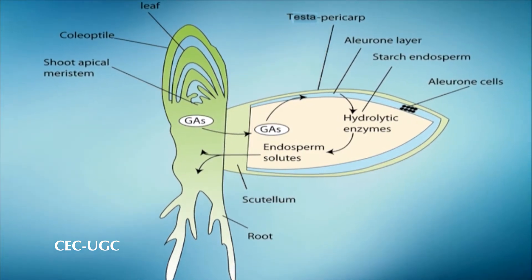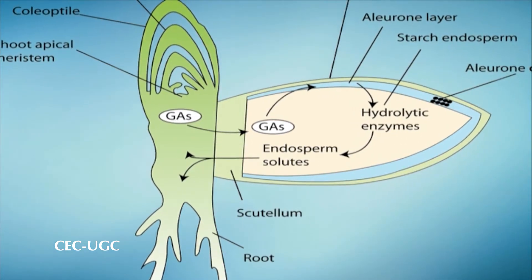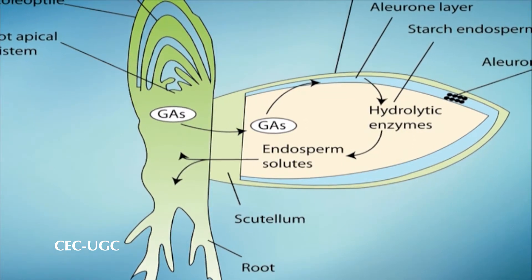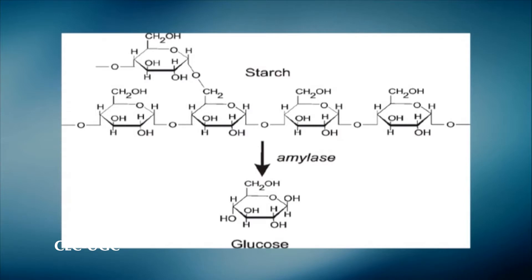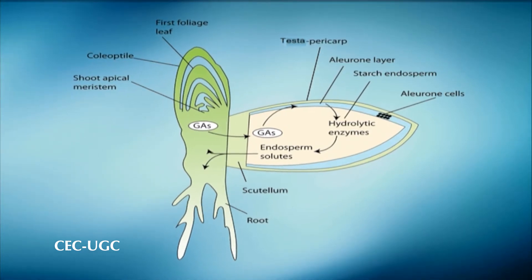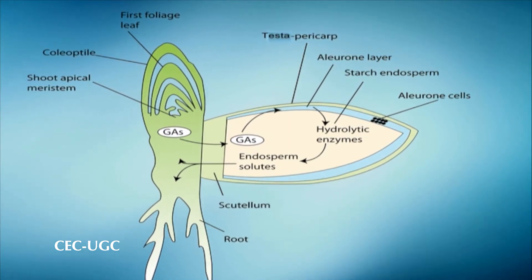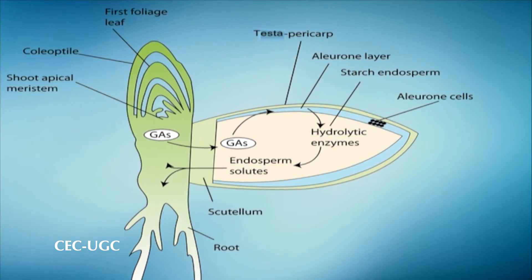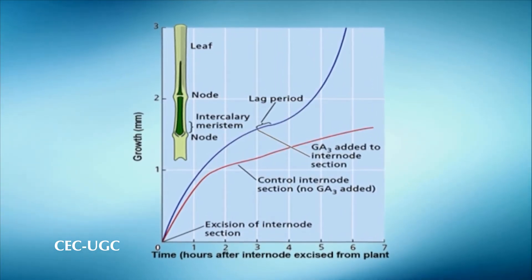Alpha amylase is secreted into the starchy endosperm of cereal seeds by both the scutellum and the aleurone layer. The sole function of the aleurone layer of seeds of graminaceous monocots such as barley, wheat, rice, rye, and oats appears to be the synthesis and release of these hydrolytic enzymes. After completing this function, aleurone cells undergo programmed cell death. Experiments carried out in the early 1960s confirmed that secretion of starch-degrading enzymes by the barley aleurone layer depends on the presence of the embryo. When the embryo was removed — that is, the seed was de-embryonated — no starch was degraded. However, when de-embryonated seeds were exposed to gibberellic acid, starch was digested, demonstrating that the embryo produces a diffusible substance that triggers alpha amylase release by the aleurone layer.